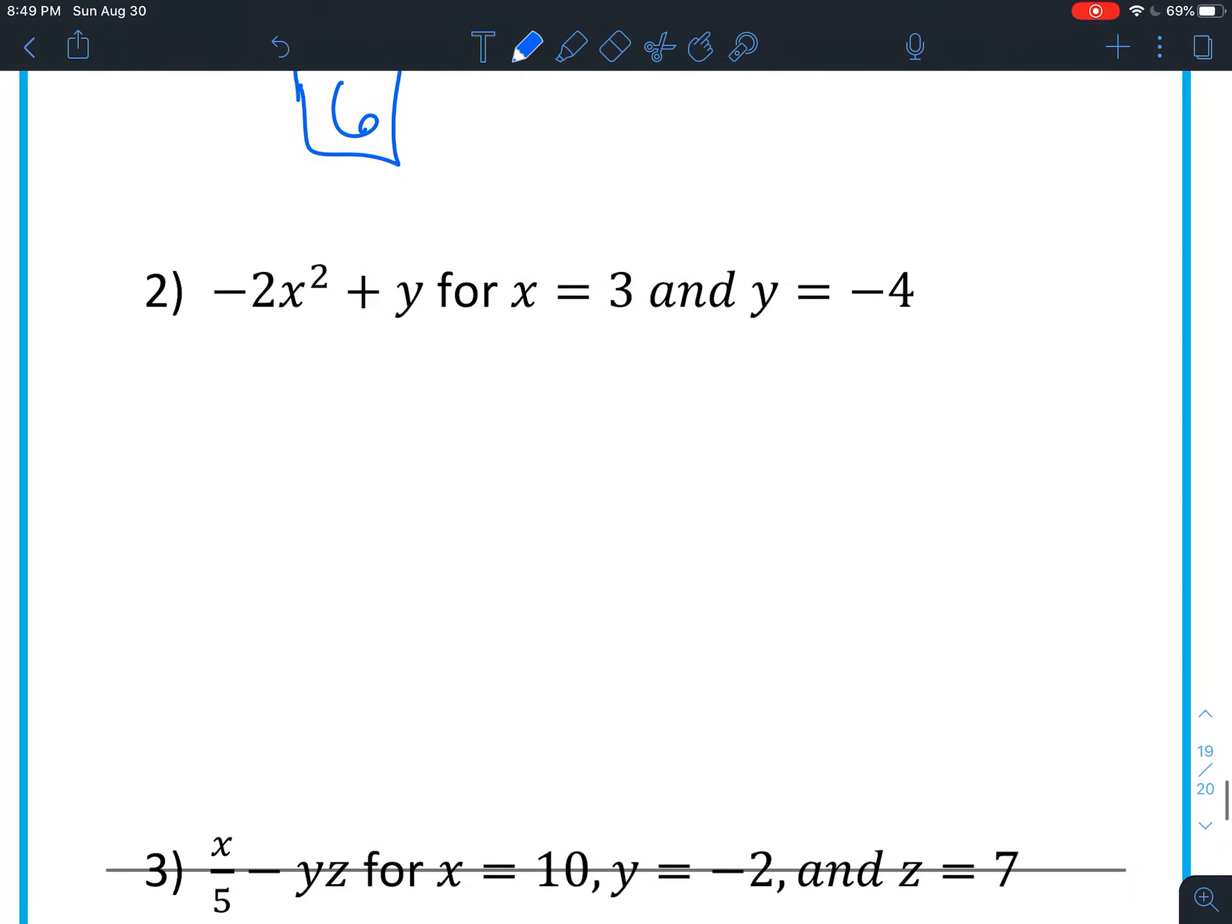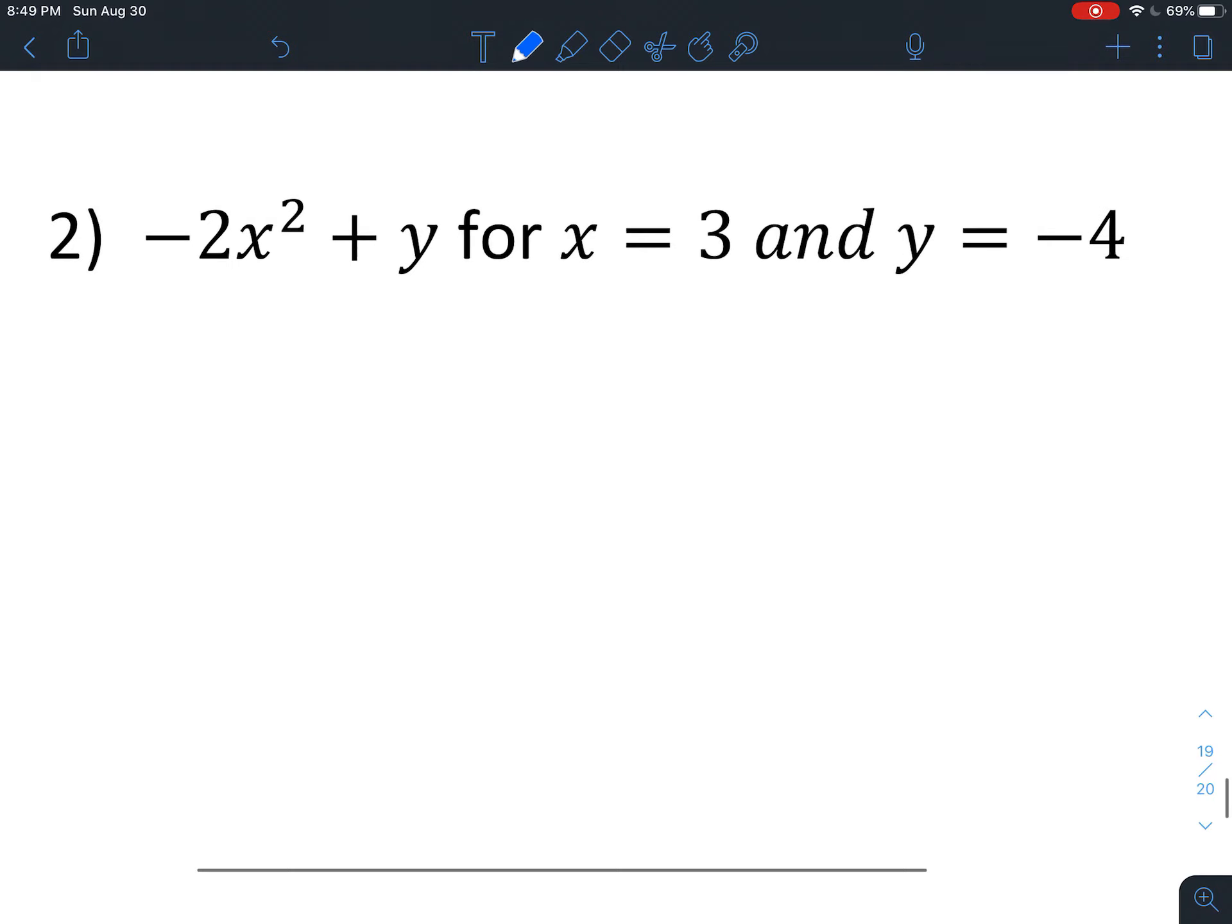Number 2. So we've got an x right here. And we have a 3 that belongs where that x is. So we're going to write negative 2, 3 squared. Remember make that a multiplication because they're right next to each other. And now we have y which is negative 4. So let's replace the y with negative 4. A lot of times we'll put parentheses just to show that that's a negative not a minus symbol.